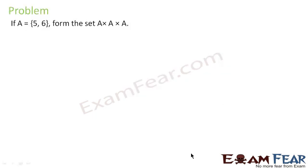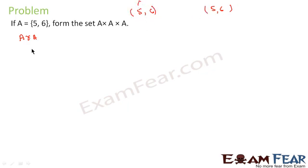Let's take one more problem. We have a set A that has two elements {5, 6} and we have to find A×A×A. Before finding A×A×A, let's find A×A. Taking two sets {5,6} and {5,6}: the first element paired with the first gives (5,5), then (5,6), then (6,5), and finally (6,6). So we have A×A ready.